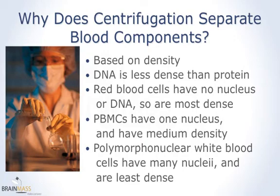Centrifugation separates blood components based on density. The most dense items will go to the bottom of the tube upon spinning, and the least dense will move toward the top. DNA is less dense than protein. Since red blood cells have no nucleus and therefore no DNA, they are mostly protein and are the most dense blood component. PBMCs have one nucleus and are of medium density. Polymorphonuclear cells have multiple nuclei and therefore are least dense.